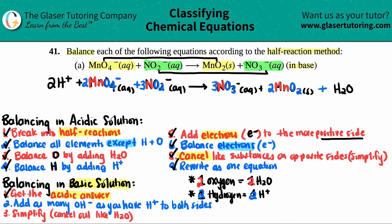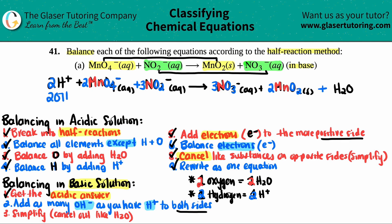Now we have the acidic answer, so we just need a couple more steps for the basic solution. The first thing is to add as many OH⁻ as we have H⁺, but to both sides — you have to be fair. The H⁺ is what makes this equation acidic; the OH⁻ is what makes it basic. I see two H⁺, so I add two OH⁻ to both sides.